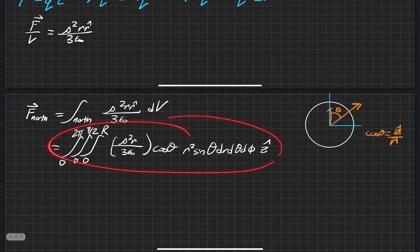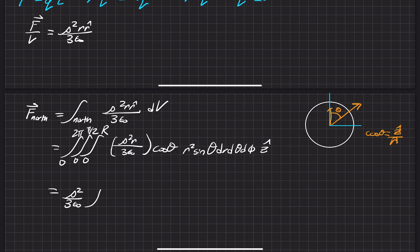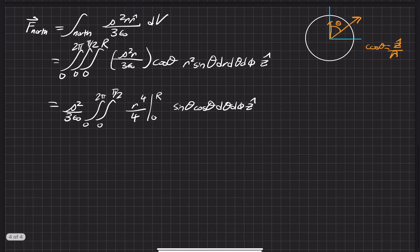Moving all constants ρ²/3ε₀ out front, we execute the r integral first. We have r³ from combining the r in the force per unit volume with the r² from the volume element, so the integral of r³ from 0 to R gives R⁴/4. Combining with the constants, the denominator becomes 12ε₀.